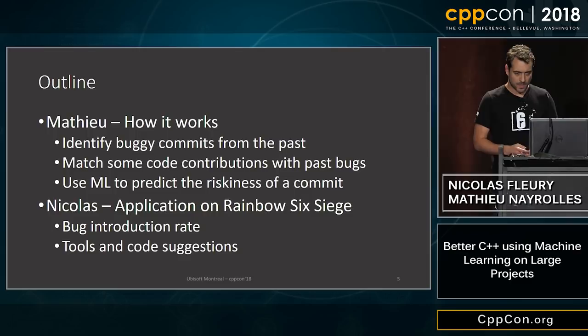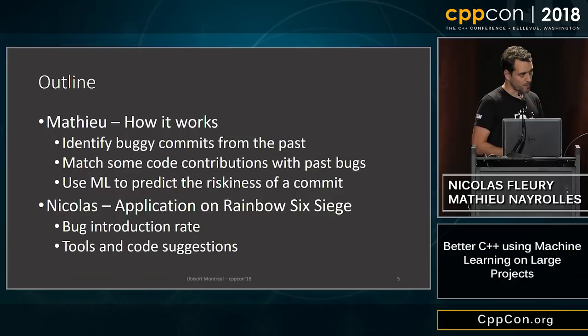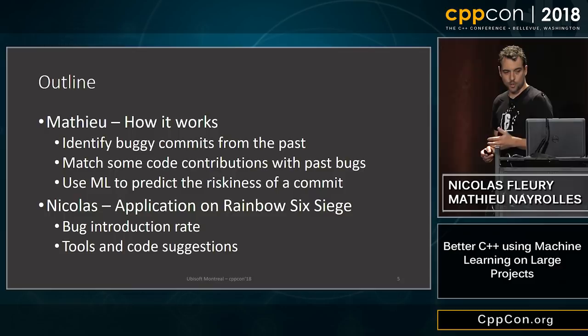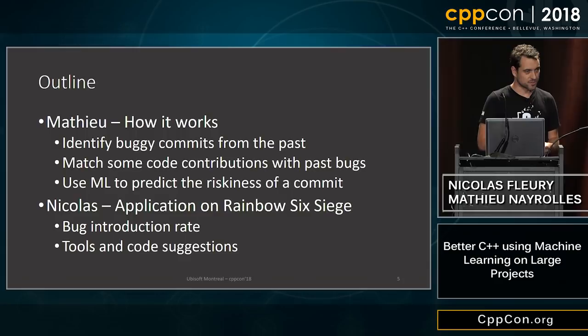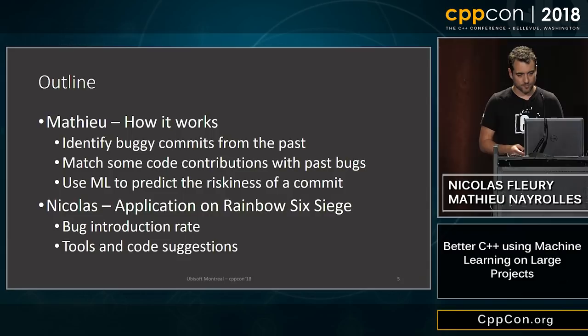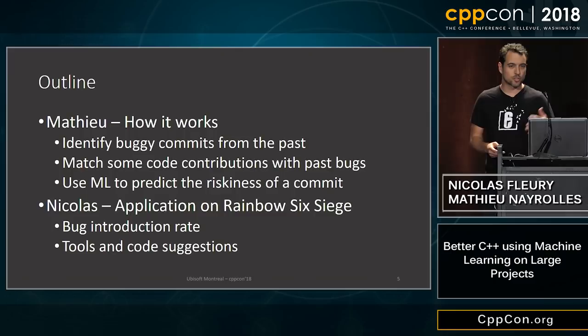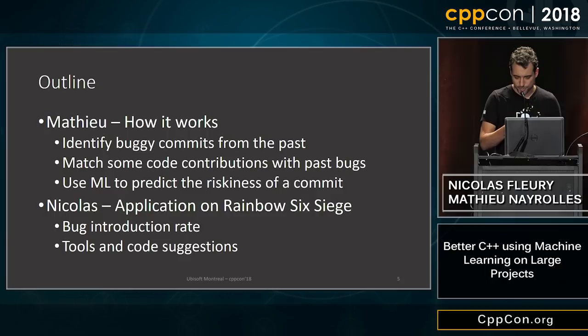We'll show how we identify buggy commits from the past, how we match code contributions with past bugs, and how we use machine learning to predict the riskiness of a commit. Then I'll come back and discuss the application on Rainbow Six Siege. This tech is not specific to Rainbow Six Siege — it's just the project with which we are testing the tech at Ubisoft.